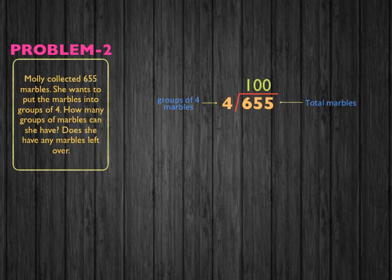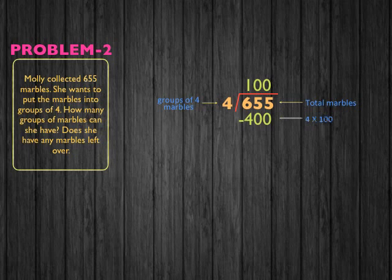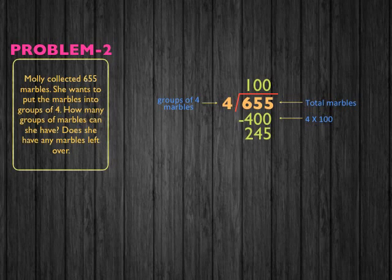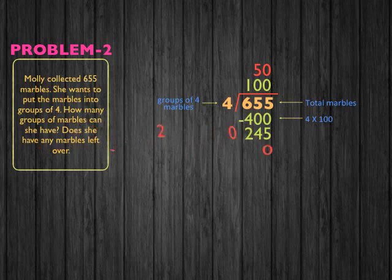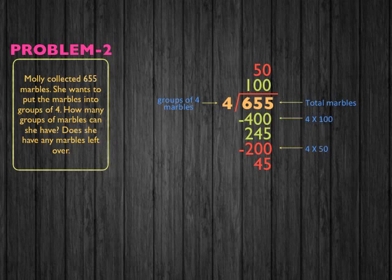That's 100. Because 100 times 4 equals 400. So 655 minus 400 equals 245. Now we ask ourselves how many groups of four marbles can go into 245, which is 50. 50 times 4 equals 200. So we subtract 245 minus 200, which equals 45 marbles.